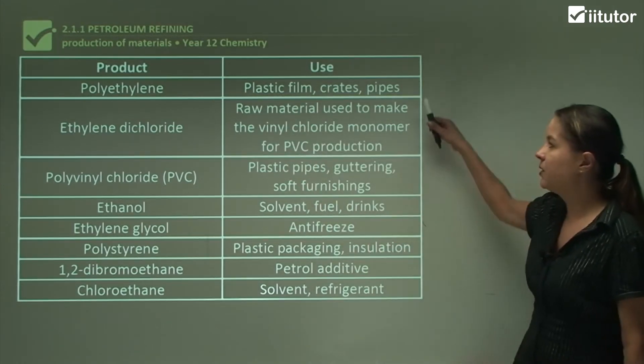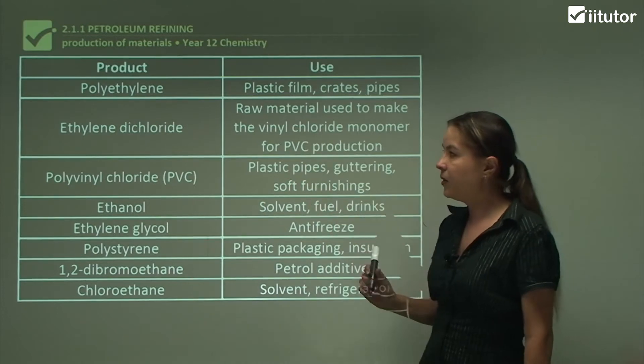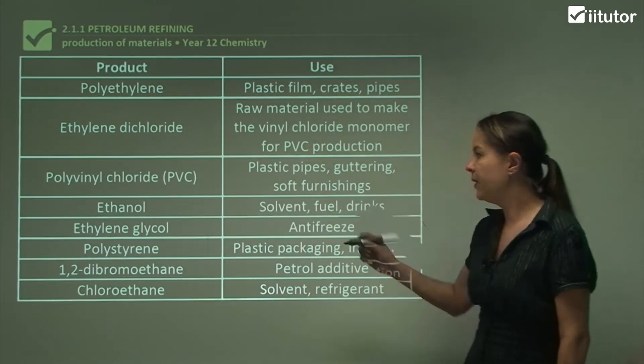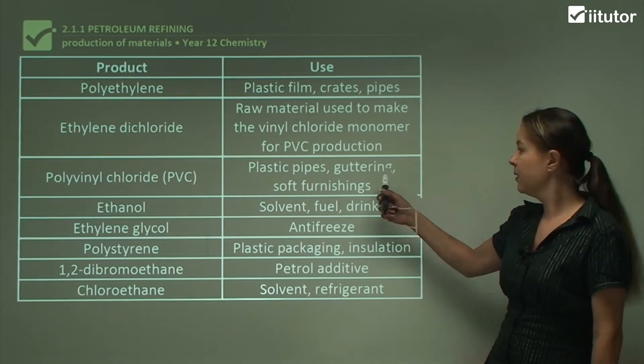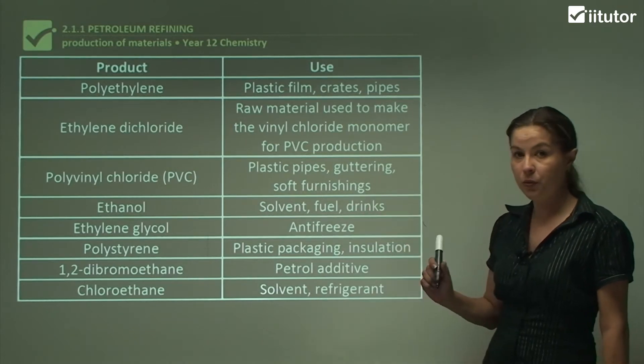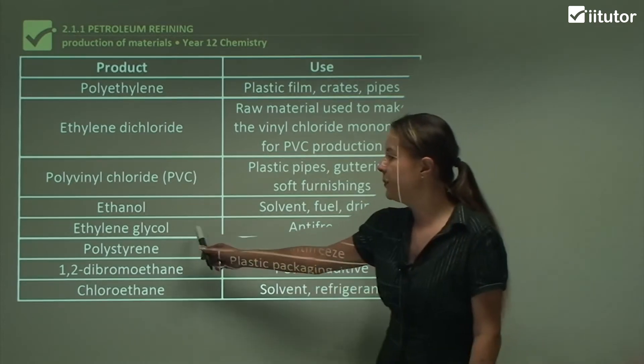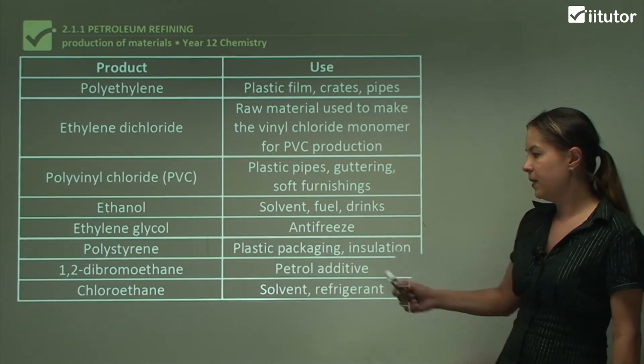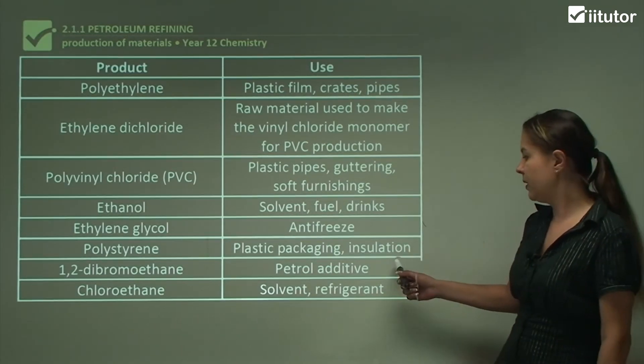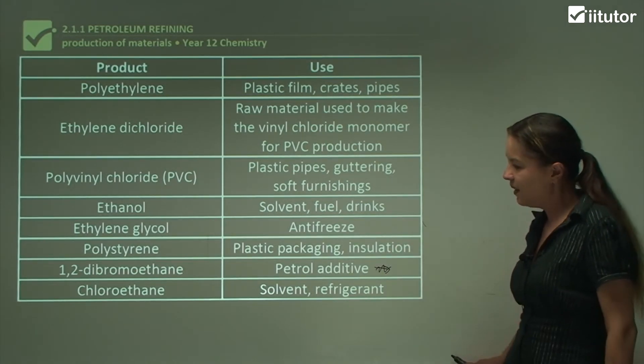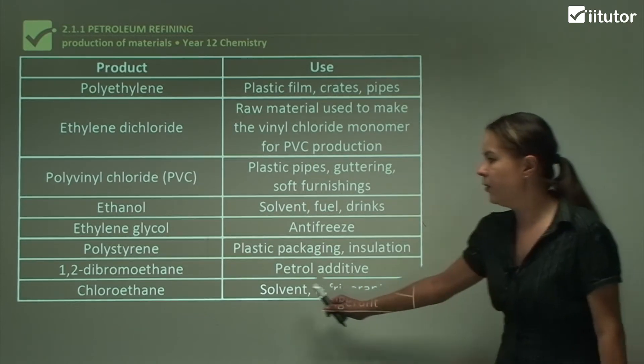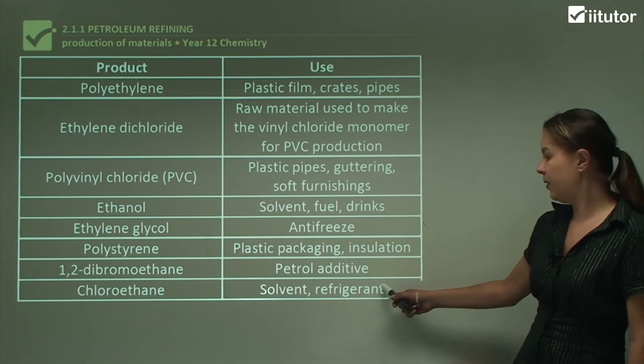Now let's look at some products that we've discussed today and their specific uses. We started by looking at polyethylene, it's used for plastic film, crates and pipes. Ethylene dichloride is used as the raw material to make the vinyl chloride monomer for PVC. We've looked at PVC, polyvinyl chloride, for plastic pipes, for gutterings and for soft furnishings. We looked at ethanol. Now ethanol is a solvent, an organic solvent. It's also put into fuel and it's also a drink, alcoholic drinks. We also looked at ethylene glycol, which is used as an antifreeze. Polystyrene for plastic packaging and insulation. We looked at 1,2-dibromoethane, which is a petrol additive. Dibromoethane as a petrol additive and chloroethane. These two are also solvents, organic solvents. So chloroethane as a solvent and also as a refrigerant, either in fridges or in cars.